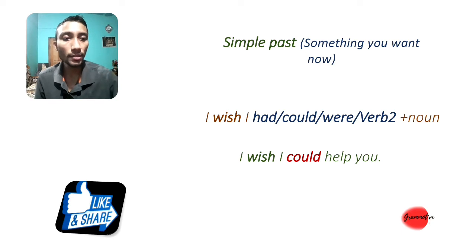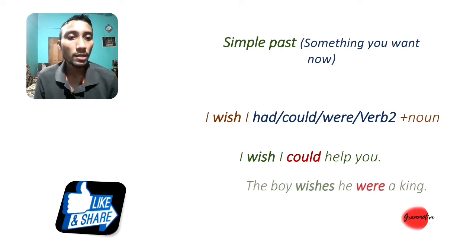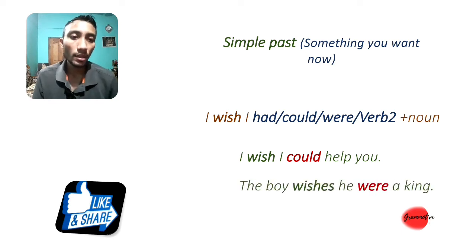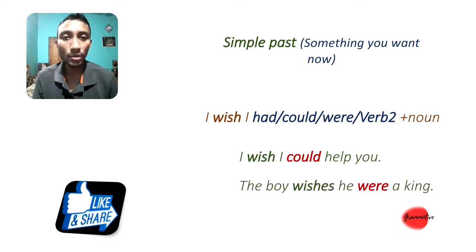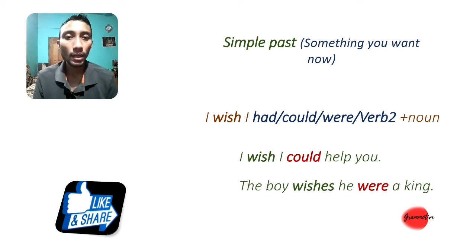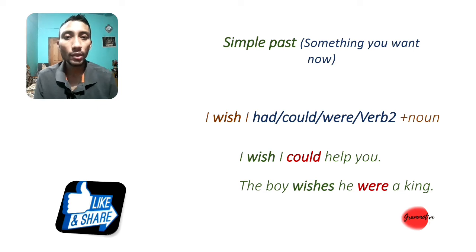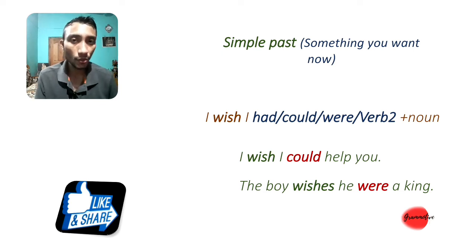Next example: The boy wishes he were a king. This means the boy is not a king — the wish is not possible. This uses simple past tense.